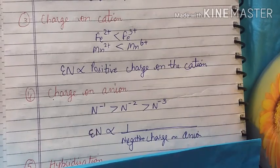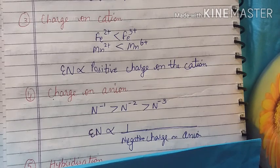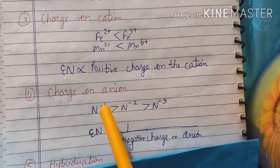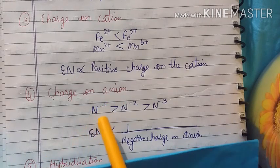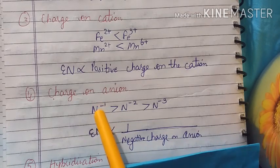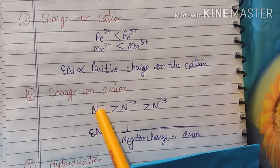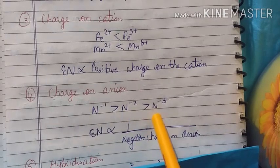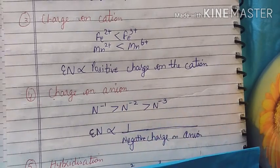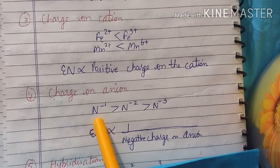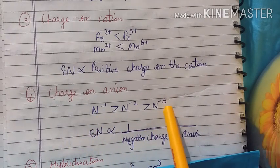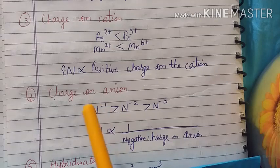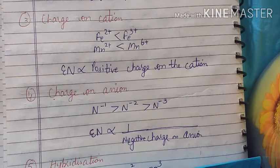Charge on anion. More negative charge means less electronegativity. Suppose nitrogen has minus one, minus two, minus three charges. At minus one, seven protons and eight electrons. At minus three, seven protons and ten electrons. The force of attraction decreases as more electrons are added to the same number of protons, so the tendency to attract electrons decreases.